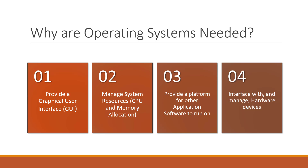First, they provide a graphical user interface, often called a GUI. This allows the computer's user to communicate with it, and to get information back in return. Next, the operating system will manage system resources, such as allocating memory to programs, and managing the central processing unit.